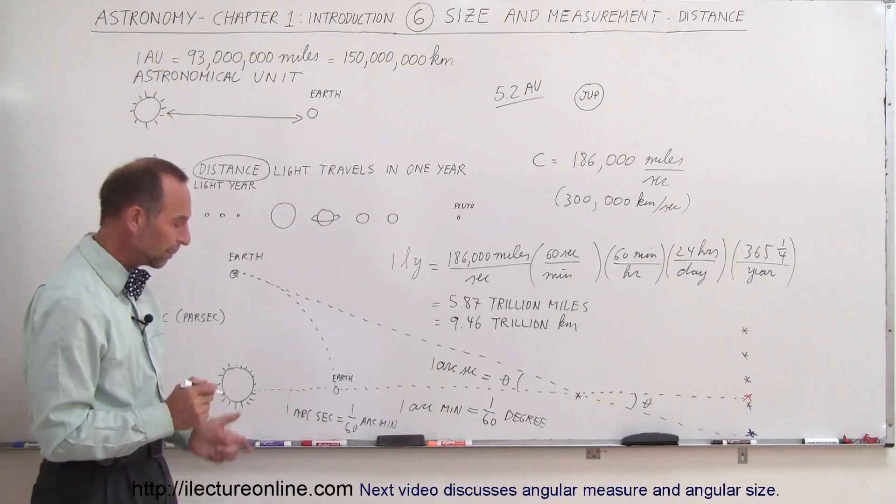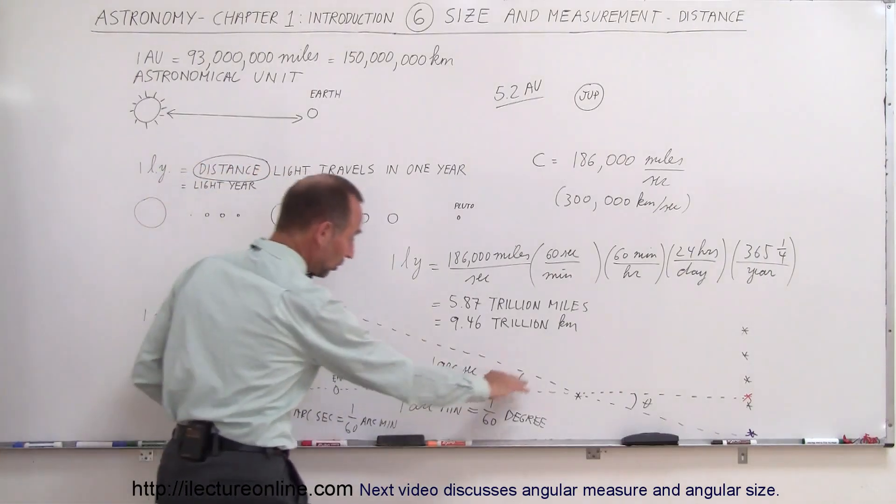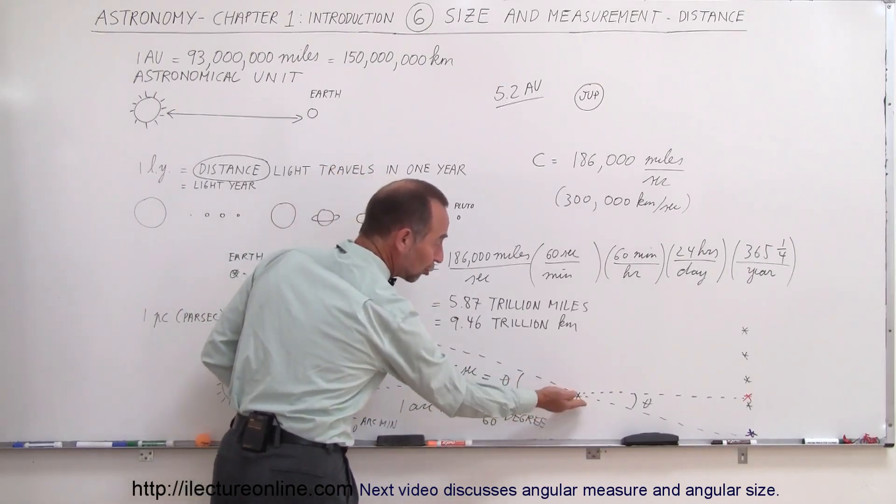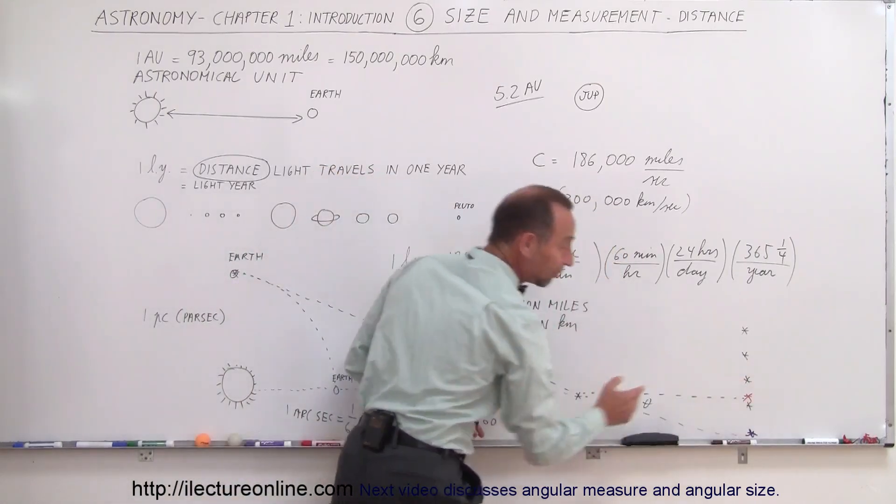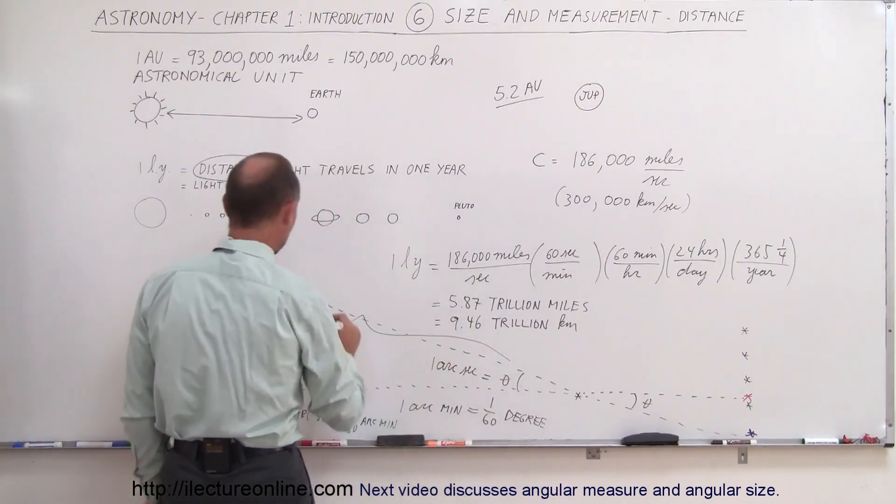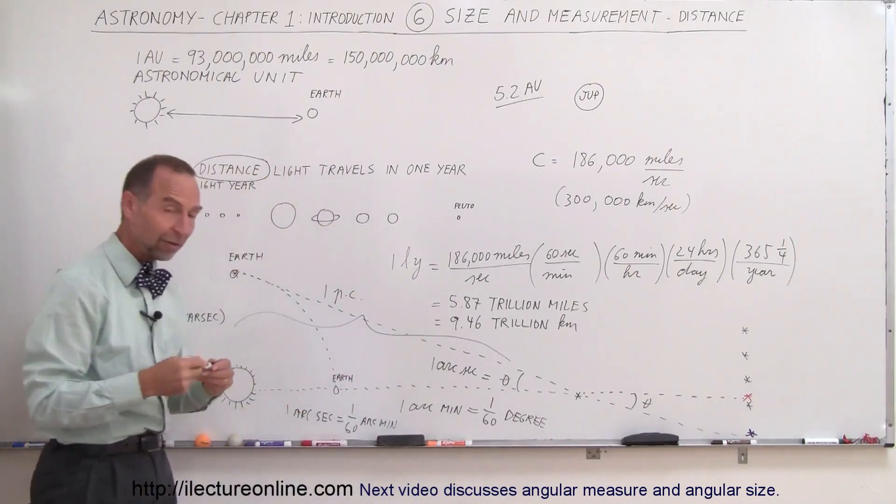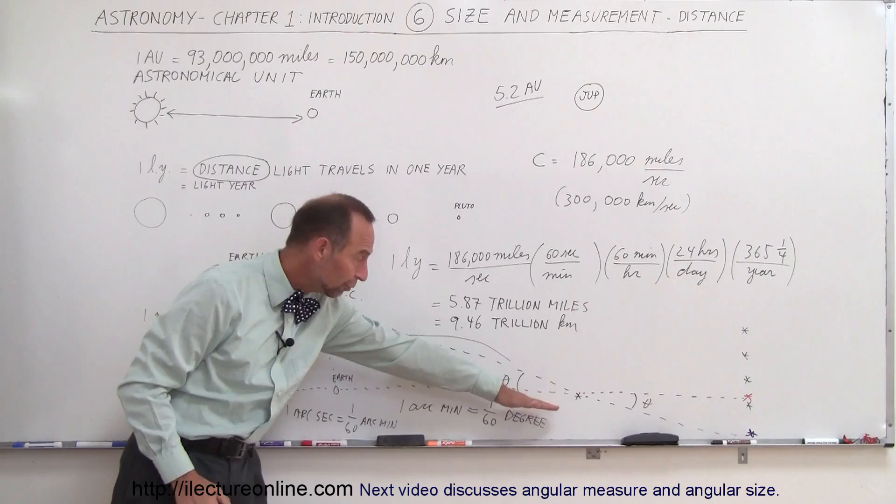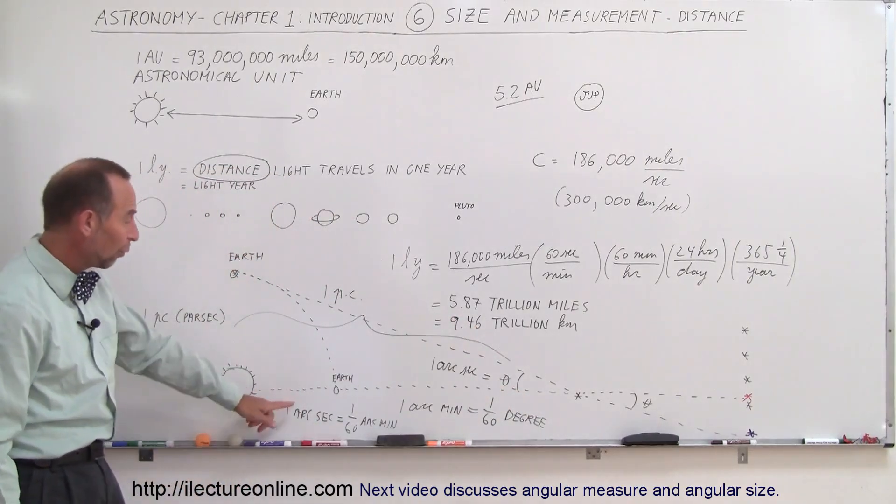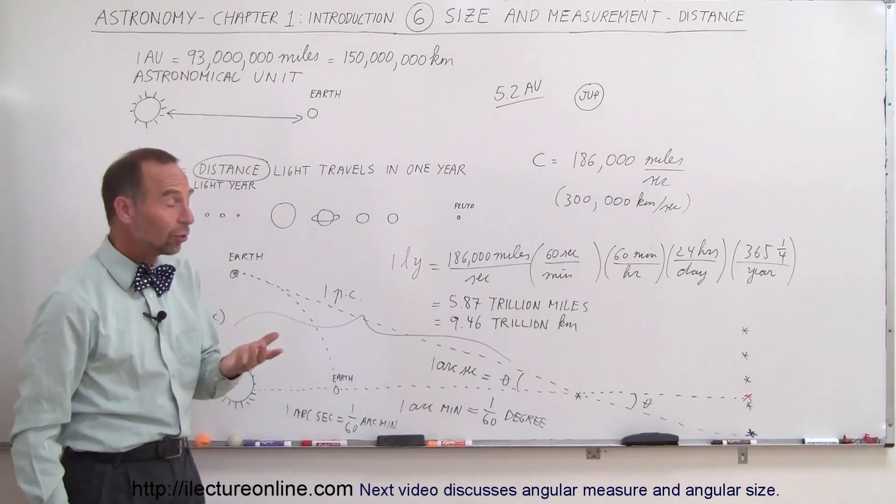Hmm, that means that one arc second is one 3,600th of a degree, a very, very, very tiny angle. And yes, we can measure that. And so if we then measure an angle here of one arc second of the relative motion of this star over here relative to the stars far away, then we know that this distance is equal to one parsec. So one parsec is the distance of an object that appears to move in an angular change here of one arc second if the distance is one parsec away.